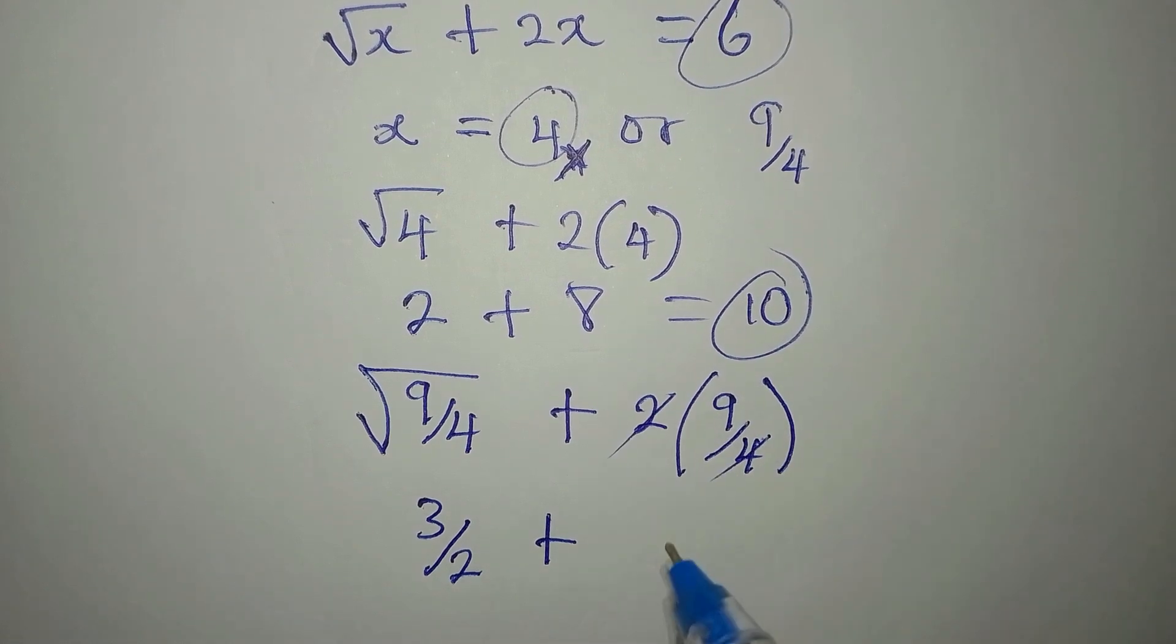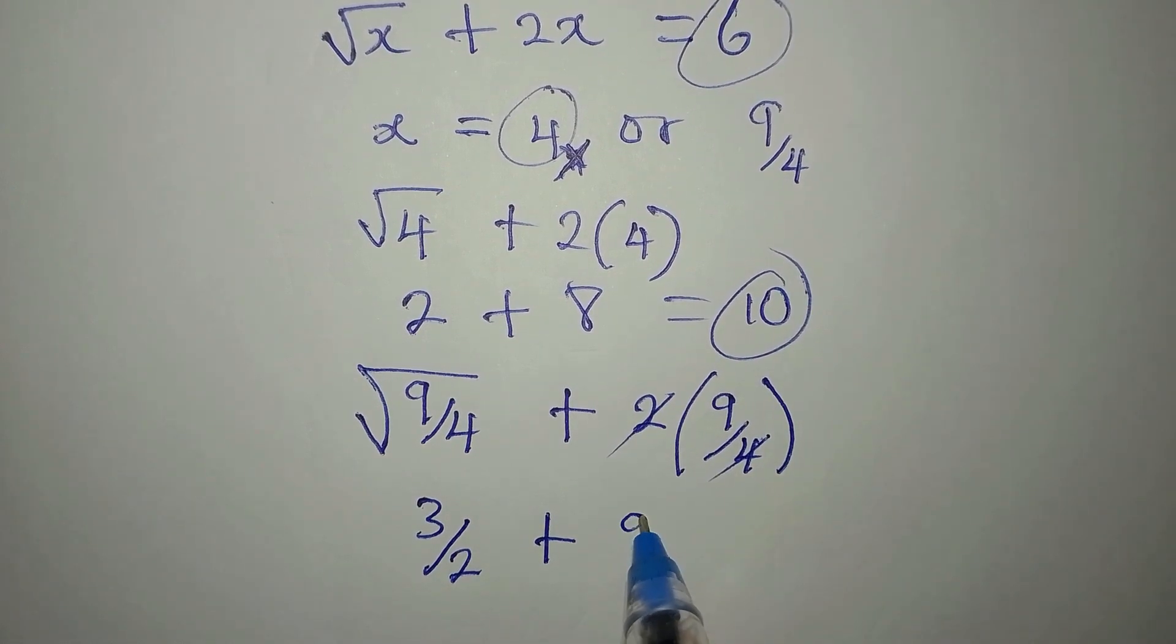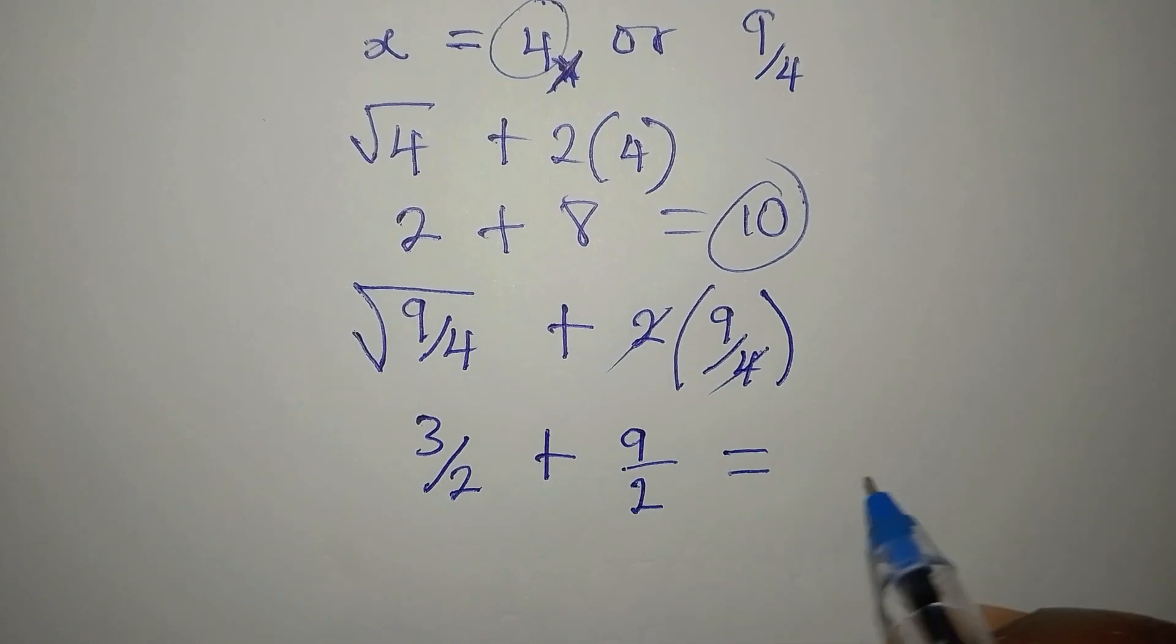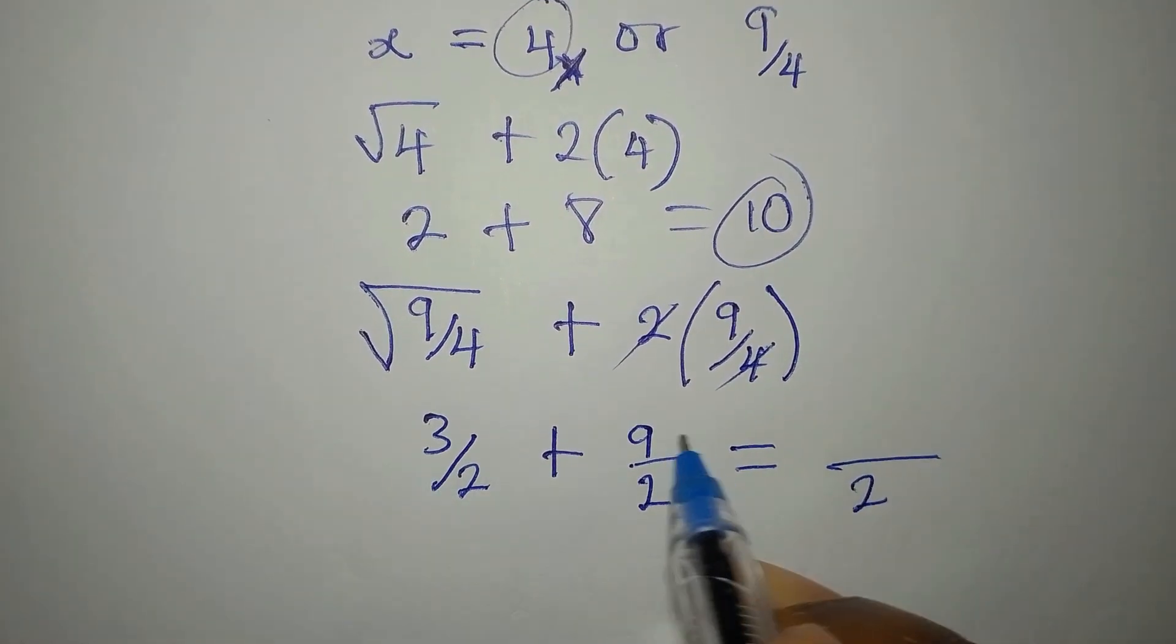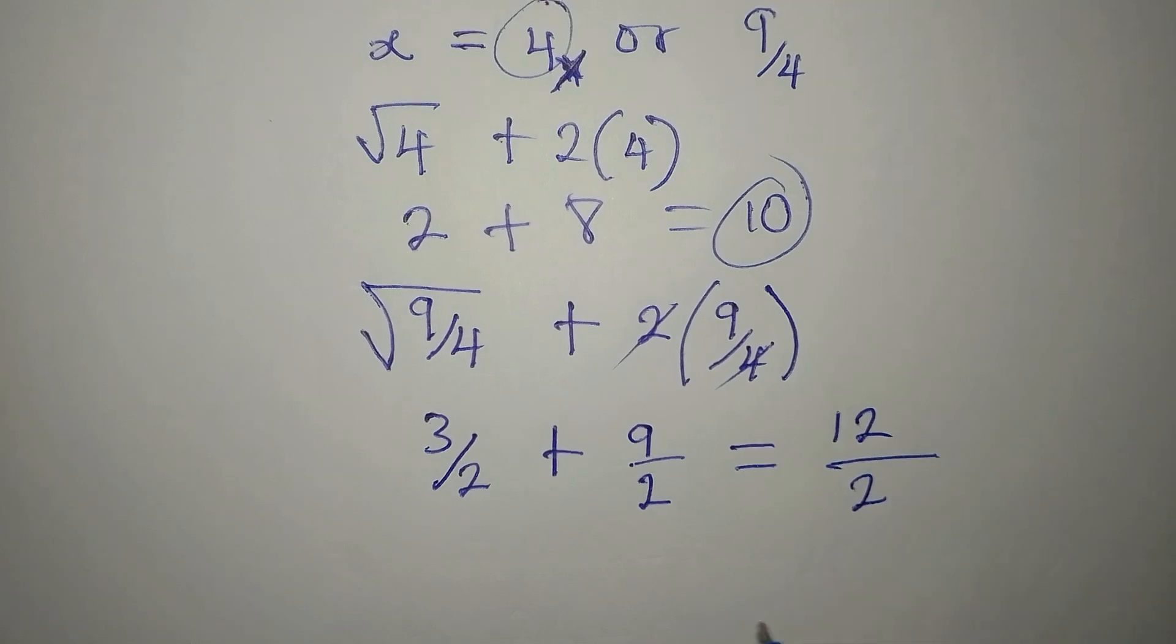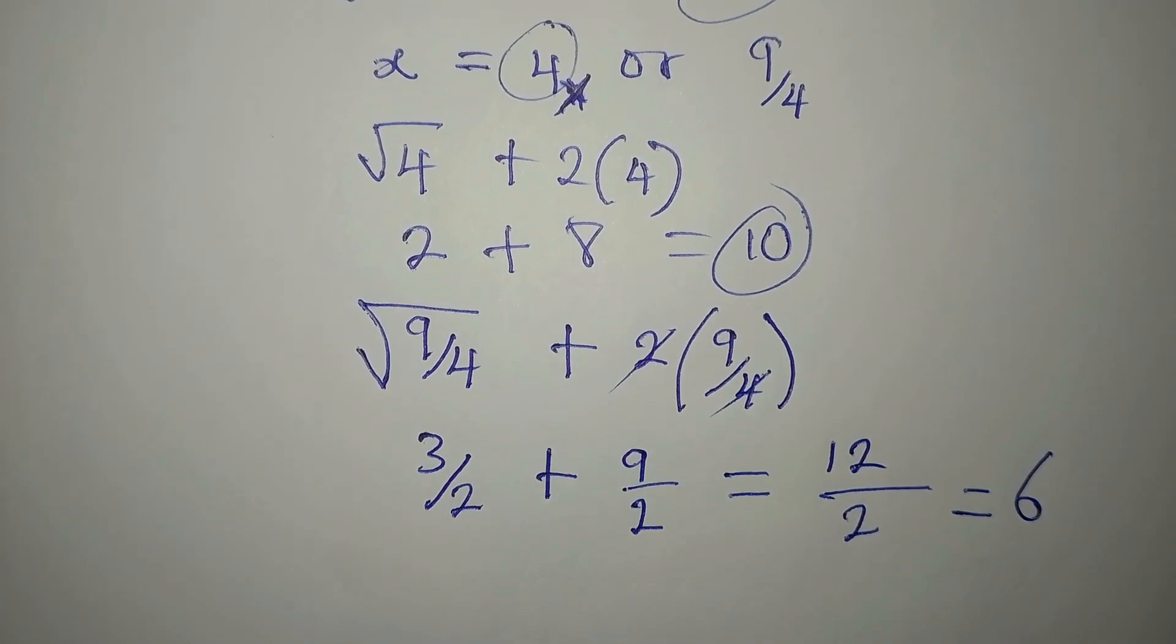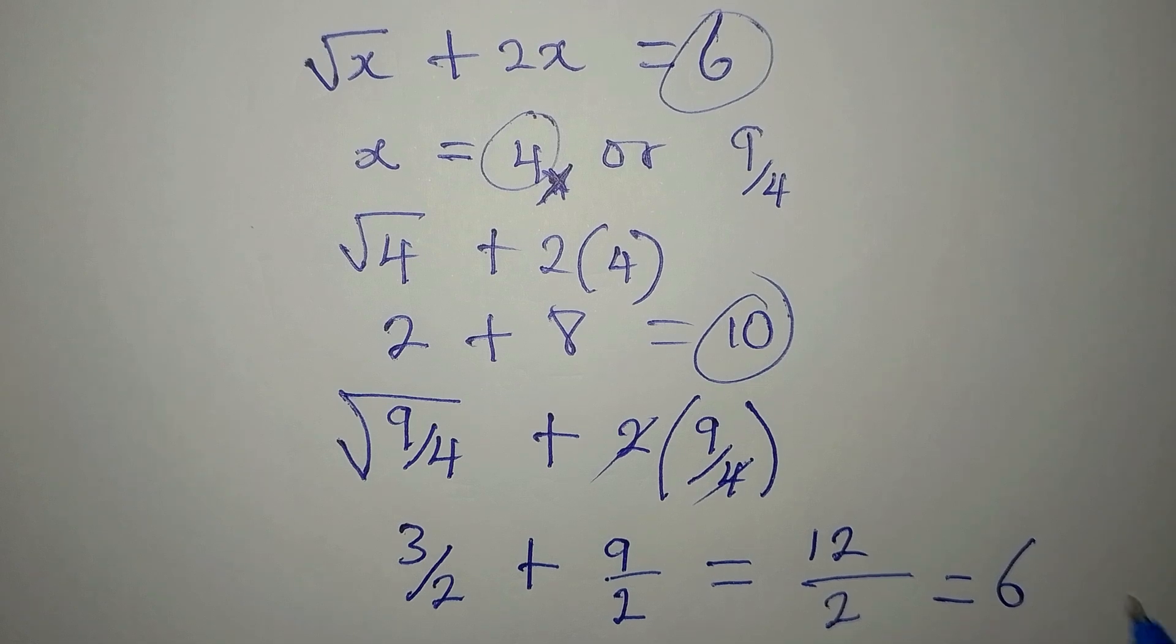Plus 2 will go here 2 times. So we have 9 over 2 as well. Let's add this. The LCM is 2. 3 plus 9 is 12. And 12 divided by 2 is 6. And we had the same 6 on the right-hand side.